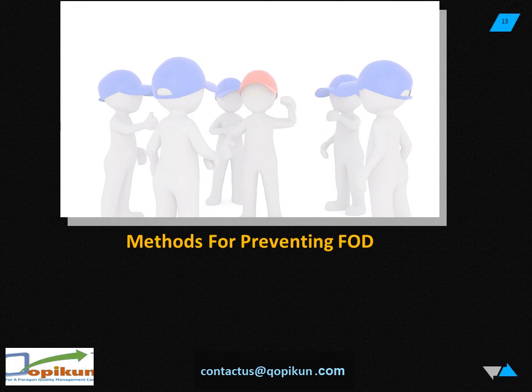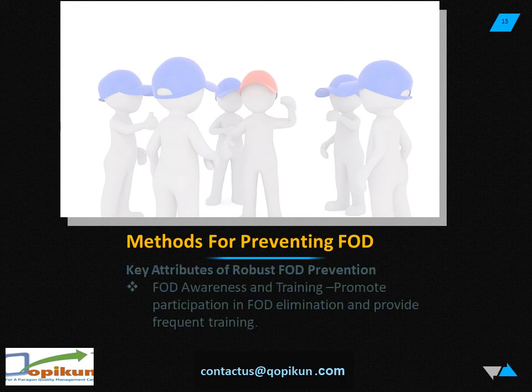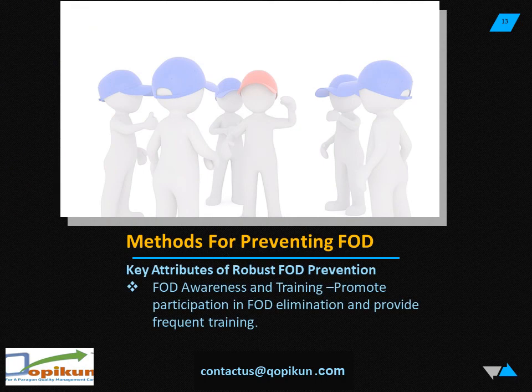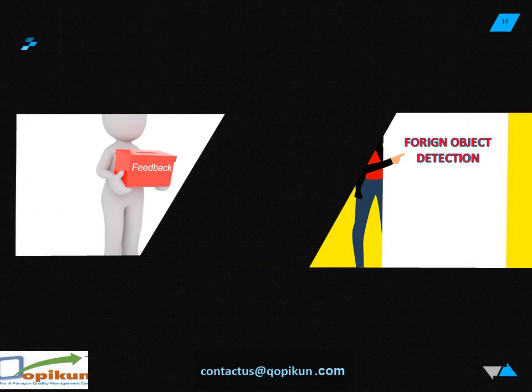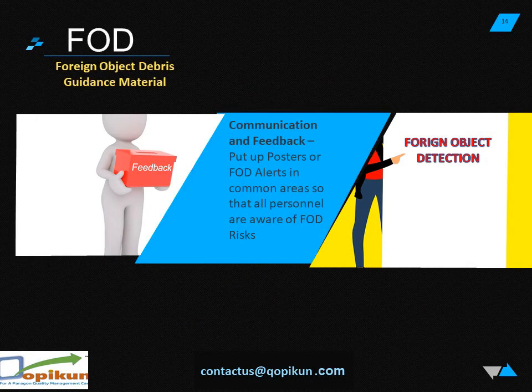Methods for preventing FOD — key attributes of robust FOD prevention. Point 1: FOD awareness and training — promote participation in FOD elimination and provide frequent training. Point 5: FOD communication and feedback — put up posters or FOD alerts in common areas so that all personnel are aware of FOD risks.